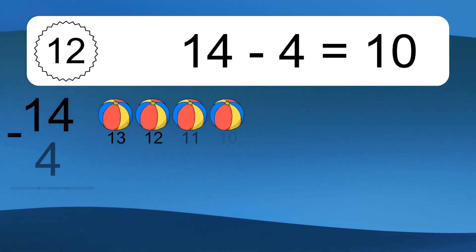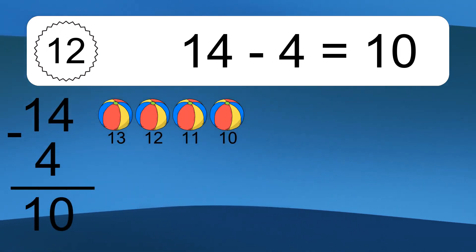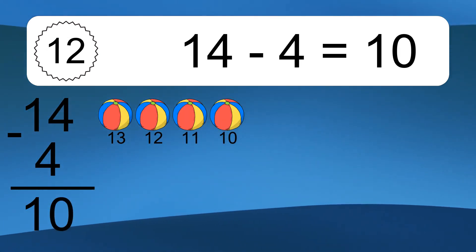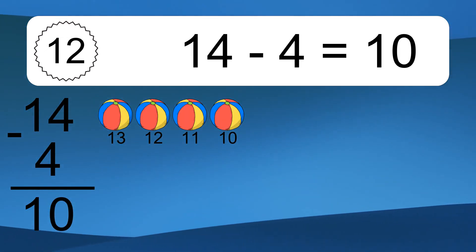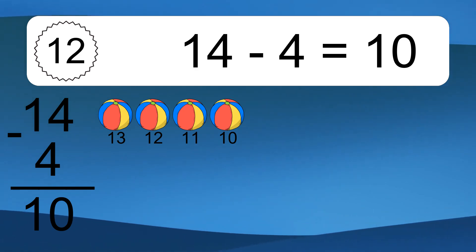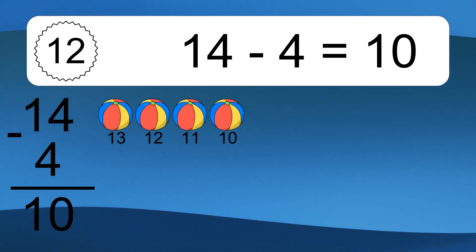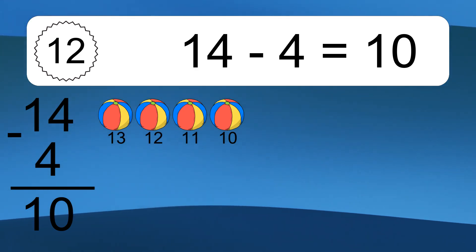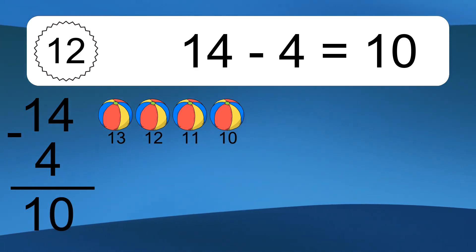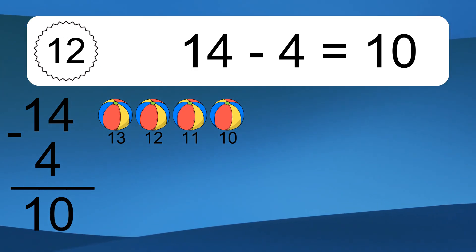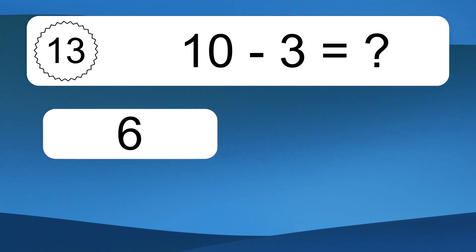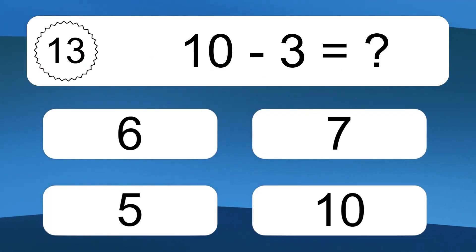14 minus 4 equals what? 14 minus 4 equals 10. Let's count it: 13, 12, 11, 10.